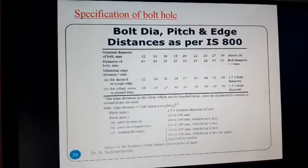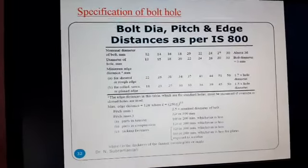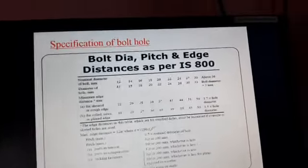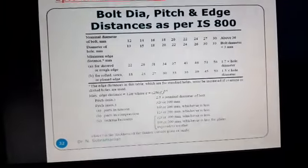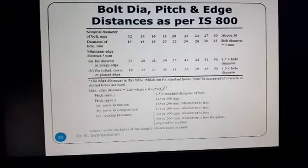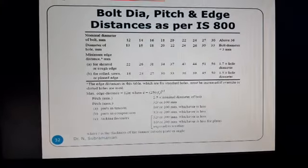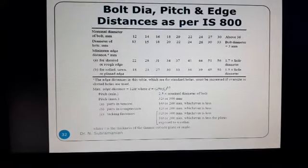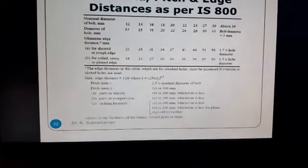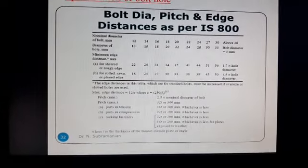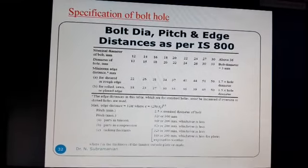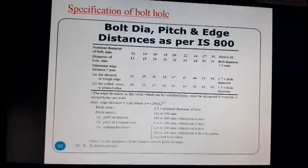Next is the specification of bolt as per IS800. We have the specification of the bolt which includes: nominal diameter of the bolt size, diameter of the hole in mm, minimum edge distance in mm, maximum and minimum pitch distance, how to calculate for tension and compression, and tacking fasteners. This is all the specification of the bolt from IS800.